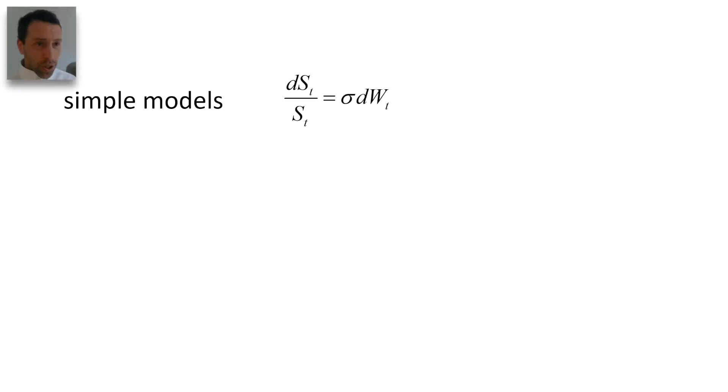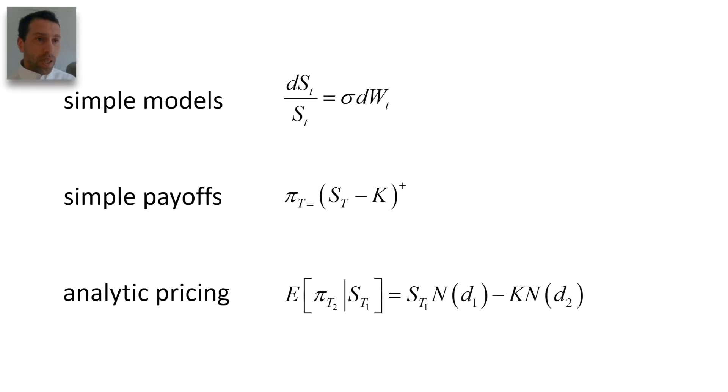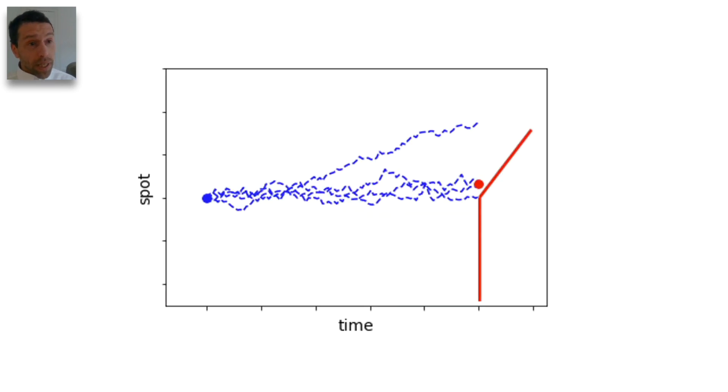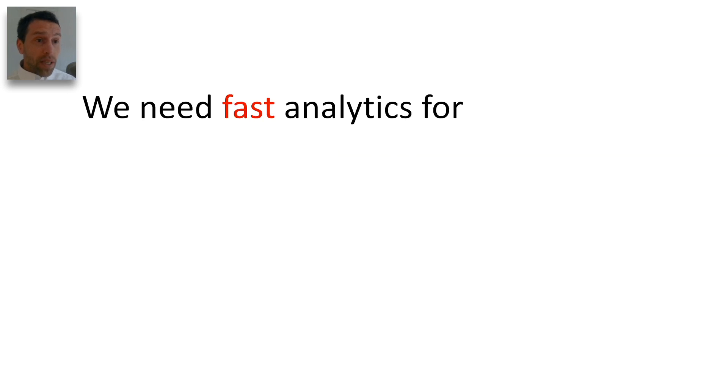Closed-form pricing, à la Black & Scholes, is only available for simple products in simple models. With more realistic transactions and more complex models, pricing involves numerical methods like Monte Carlo. This is too slow for many risk management applications.